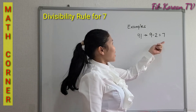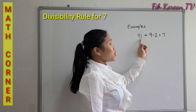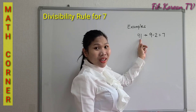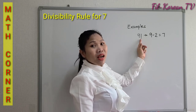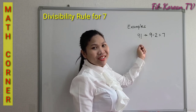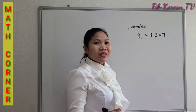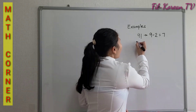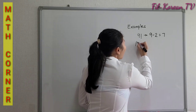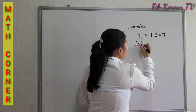So 91 can be divided exactly by seven. Another example is 126.